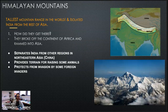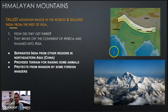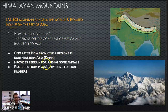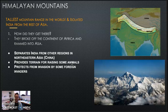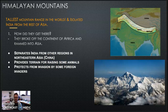One other key feature is the Himalayan mountains — the tallest mountain range in the world — and it isolated India from the rest of Asia. Everybody's heard of Mount Everest, right? Tallest in the world. How did they get there? They broke off the continent of Africa and rammed into Asia. They separated India from regions in northeastern China, provide terrain for raising some animals, and protect from invasion by foreign invaders. It really did separate them from eastern Asia — a level of protection. It also impacted the way their societies grew. The terrain was more used for raising animals as opposed to agriculture, while there was irrigation for agriculture from the Ganges.